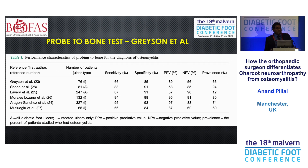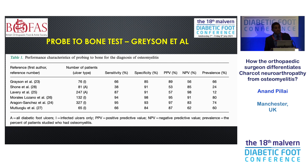The probe-to-bone test was mentioned earlier — it's a really good test. There are a number of publications since Grayson first described it, on its predictive value, specificity, and sensitivity. If you see somebody with a diabetic foot ulcer, you should probably do it. By and large, if you have a good history, examination features, and a positive probe-to-bone test, it will be hard to miss infection.